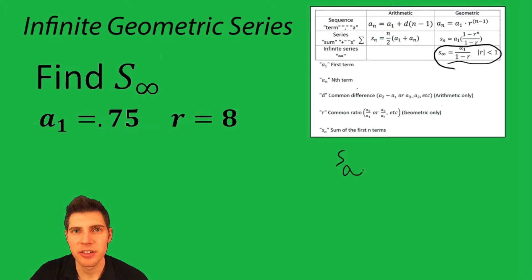Here's what we're mostly interested in: S infinity equals the first term over 1 minus r, and it puts a qualifier that the absolute value of r must be less than 1. So first we should check this. So r equals 8.